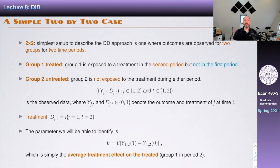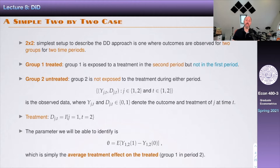In order to understand how these ideas work, the simplest case is what I call a two-by-two case, where you have two groups over two time periods. Group one is going to be the treated group — it is exposed to a treatment in the second period but not in the first period. There was a policy change from period one to period two, and now group one is subject to a treatment. Group two is the untreated group and is never exposed to the treatment, in neither the first nor the second period.